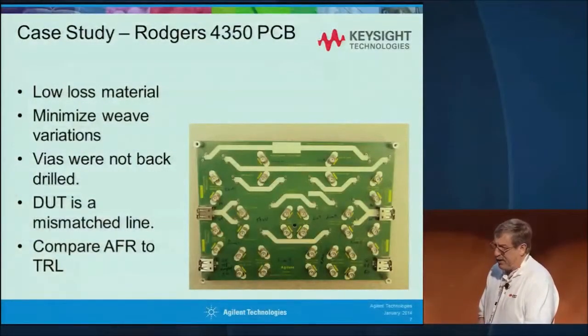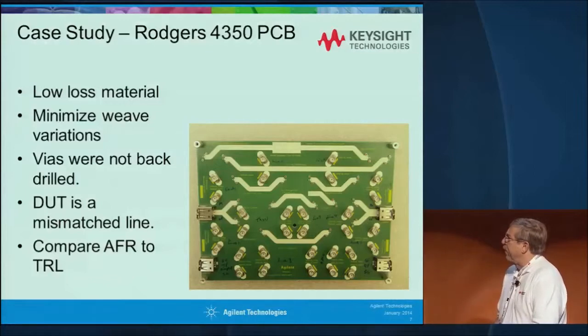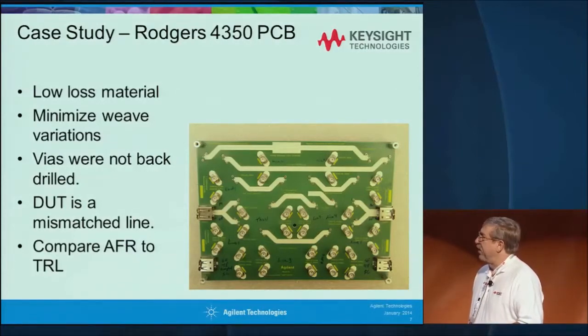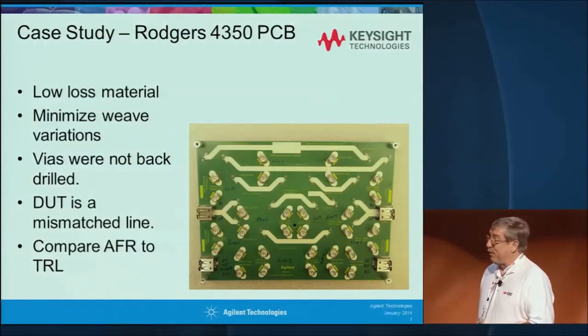You may ask, how can you get a two-port S-parameter model from just an S11 measurement? Sounds like magic — all you're measuring is S11, so how can you really model that whole fixture? I do have some data to show you. I wrote this paper about six months ago, so I have more recent data. This was a board built for the original AFR where we did the 2x through, built on Rogers material. We chose something that was low loss, offset the lines to minimize weave variations, and we did not back drill the vias purposefully — we wanted a little bit more of a challenge to see how well this worked.